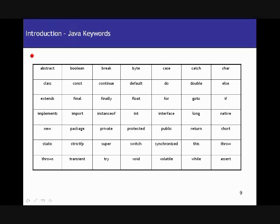You cannot use any of these keywords in your program in any other way, only in the way in which it's actually supposed to be used. Each of these keywords has got some kind of significance in the Java programming language. We've actually seen some of the keywords already in our earlier examples — like class, new, package, and public. Some of these we've already discussed and we know how to use them and why to use them.